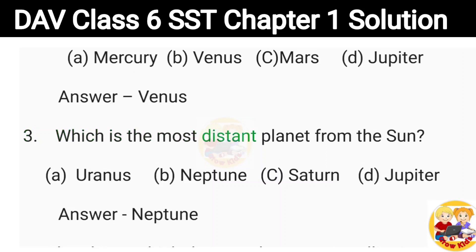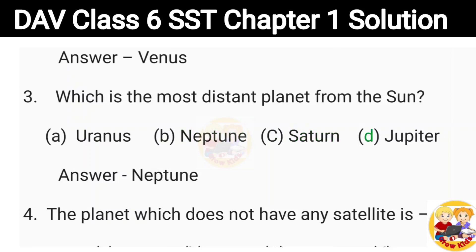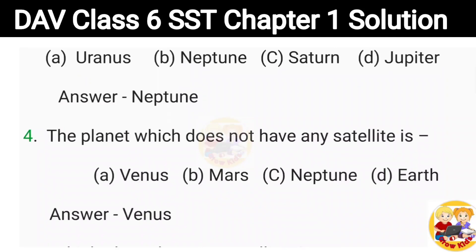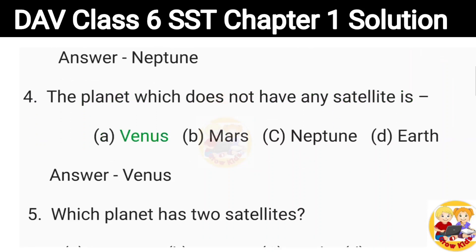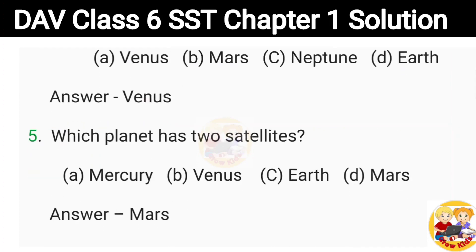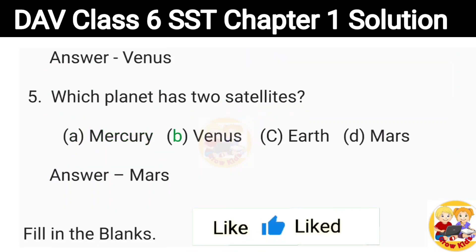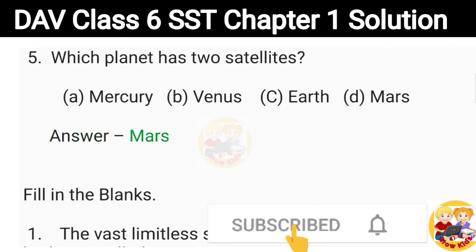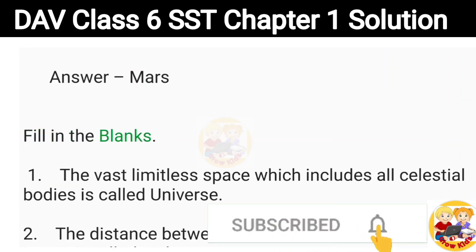3. Which is the most distant planet from the Sun? Options: Uranus, Neptune, Saturn, Jupiter. Answer: Neptune. 4. The planet which does not have any satellite is? Options: Venus, Mars, Neptune, Earth. Answer: Venus. 5. Which planet has two satellites? Options: Mercury, Venus, Earth, Mars. Answer: Mars.